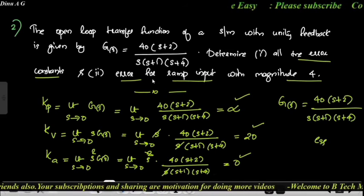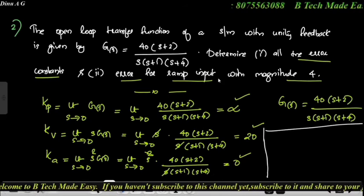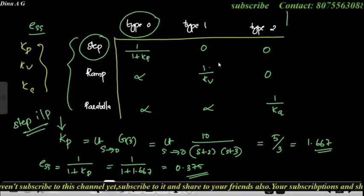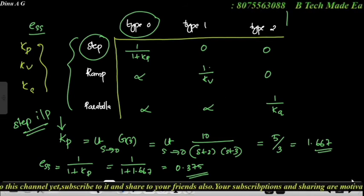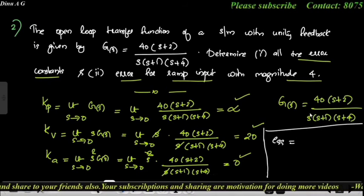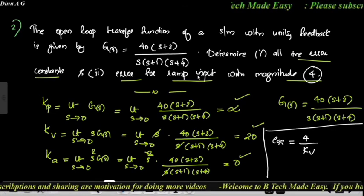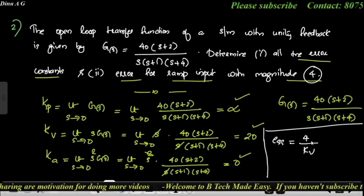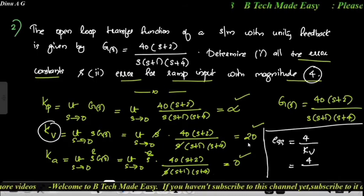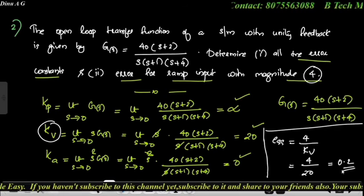Now find the error for ramp input. For ramp input, ESS = A/Kv, where A is the magnitude. We already found Kv = 20. So ESS = 4/20 = 0.2.